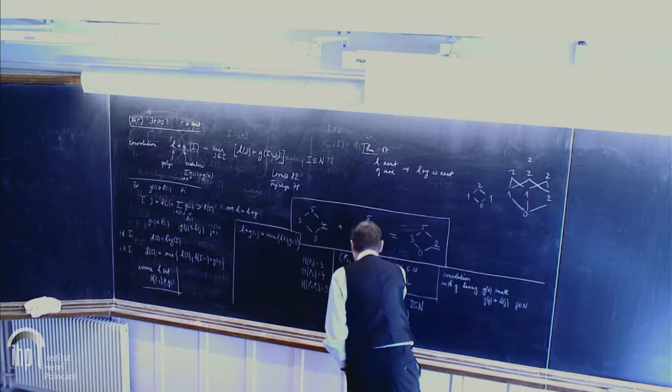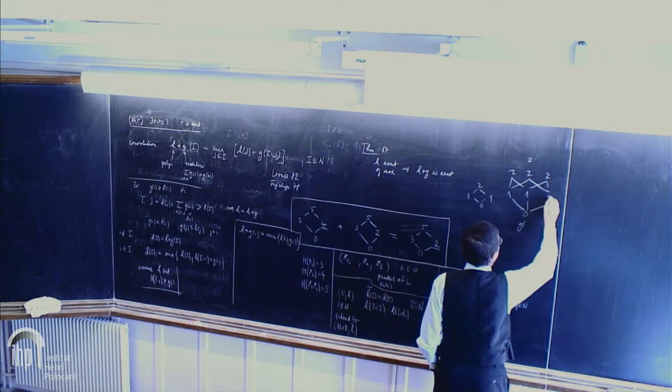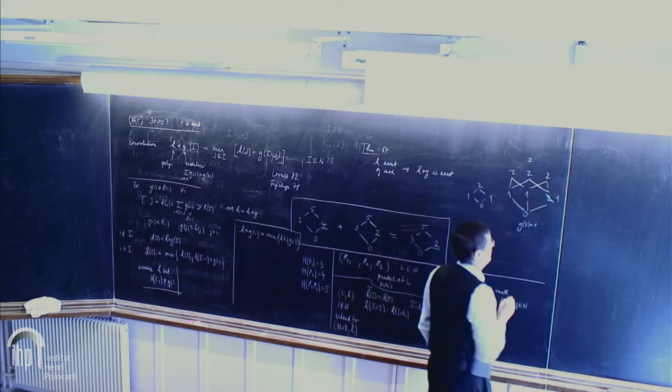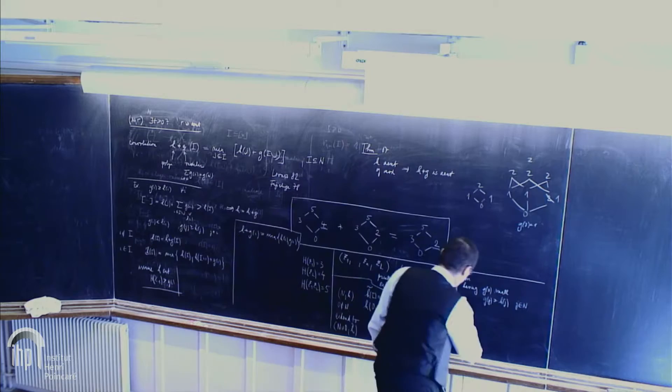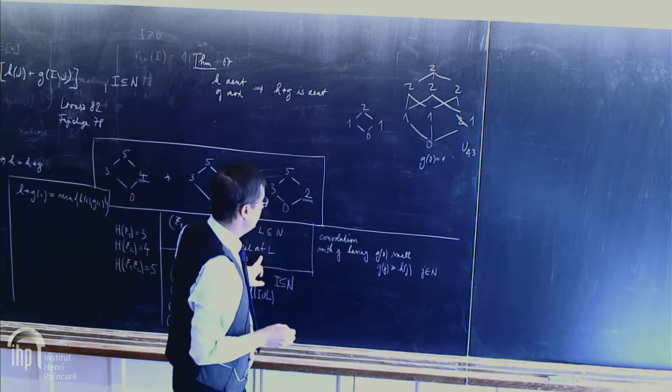And then I do convolution. Convolution with G. This is my zero, yes? G0 equal to one. So this goes down to one. And then what I got, this is a nice matroid. This is U to three. So even if I started from a non-interesting thing, and then after extension and convolution, I got extreme ray.